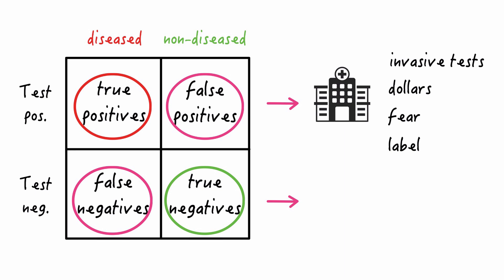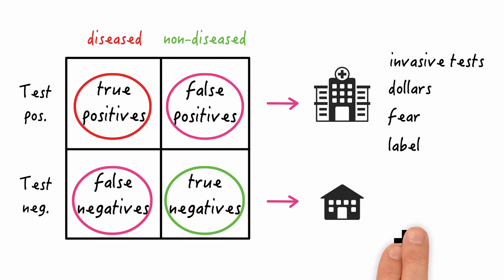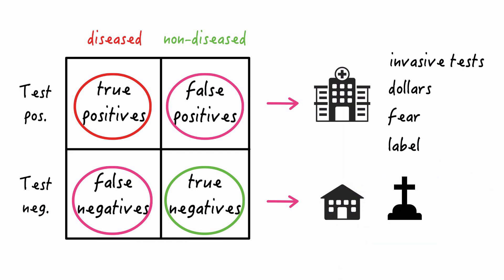On the other hand, someone who's falsely labeled as negative who has a potentially treatable disease might be sent home and die or become much sicker because nothing's done about the disease. So when we choose the threshold of the test, we have to weigh the relative importance of problems associated with false positives and false negatives.